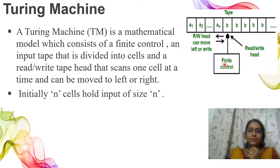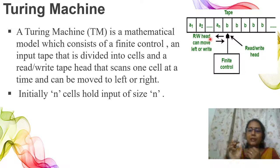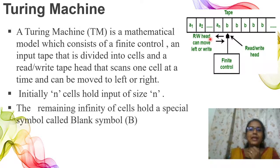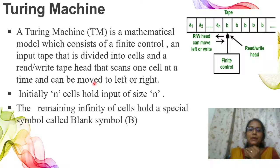Initially, n cells hold the input of size n — for example, input 3ABB would hold 3 cells. The input tape is infinite; there is no fixed number of cells. The remaining infinity of cells hold a special symbol called the blank symbol.